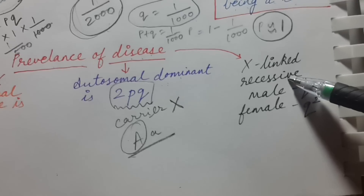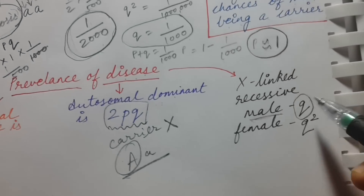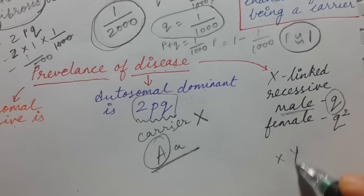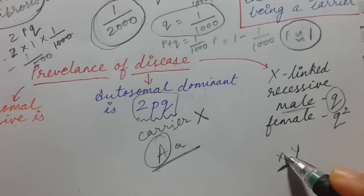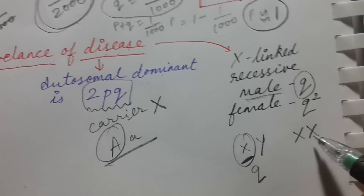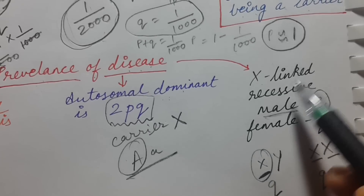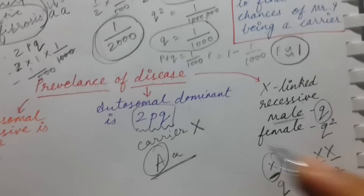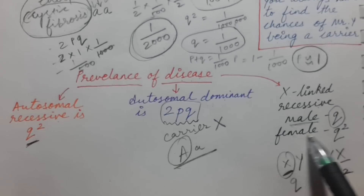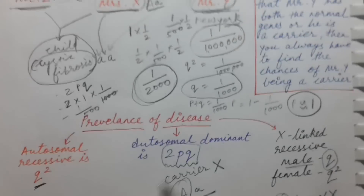For X-linked recessive disease, if the person given is male, the prevalence of disease will be q — not q² — because in males, even one abnormal X gene causes disease. For females to have an X-linked recessive disease, both X chromosomes must be abnormal, so the prevalence in females is q². Knowing these formulas for autosomal dominant and X-linked recessive diseases gives you an extra advantage.